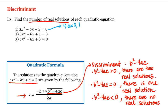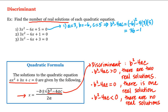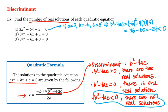Let's compute the discriminant for each equation. For the first equation, a = 3, b = −6, and c = 5. So the discriminant b²−4ac = (−6)² − 4(3)(5) = 36 − 60 = −24, which is a negative number. That means we're in the third case, and our first equation has no real solutions.